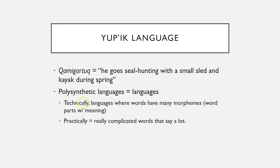So that is one, two, three — really four, five, six, seven, eight, nine, ten, eleven, twelve — twelve different English words wrapped up in one Yup'ik word. That's what we call a polysynthetic language.